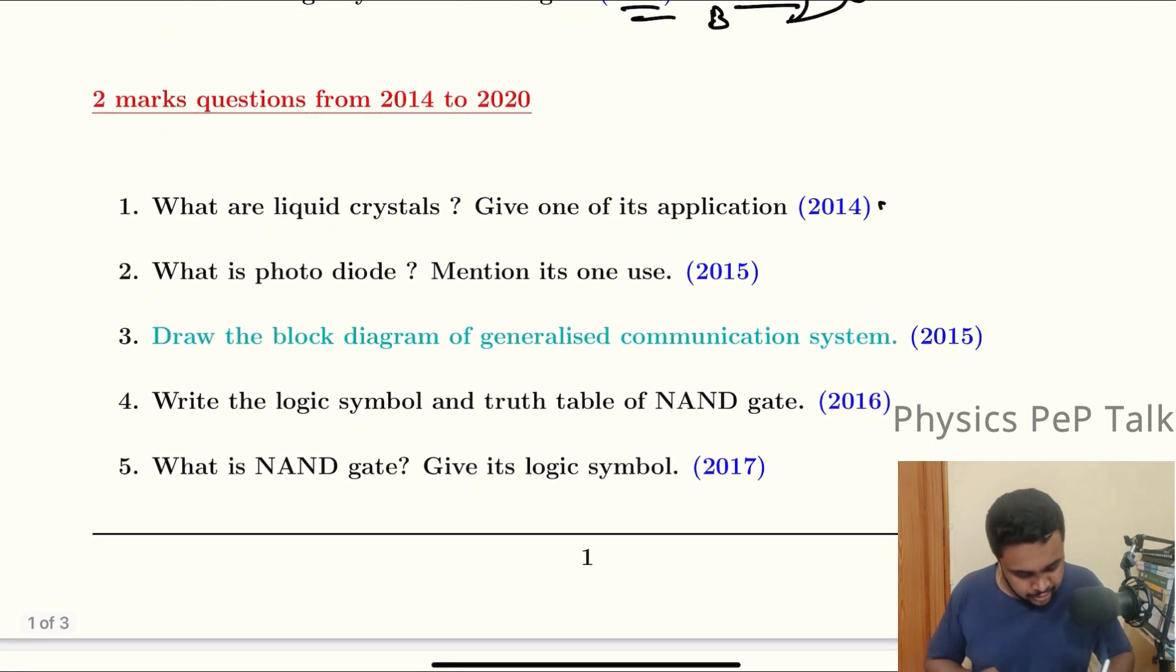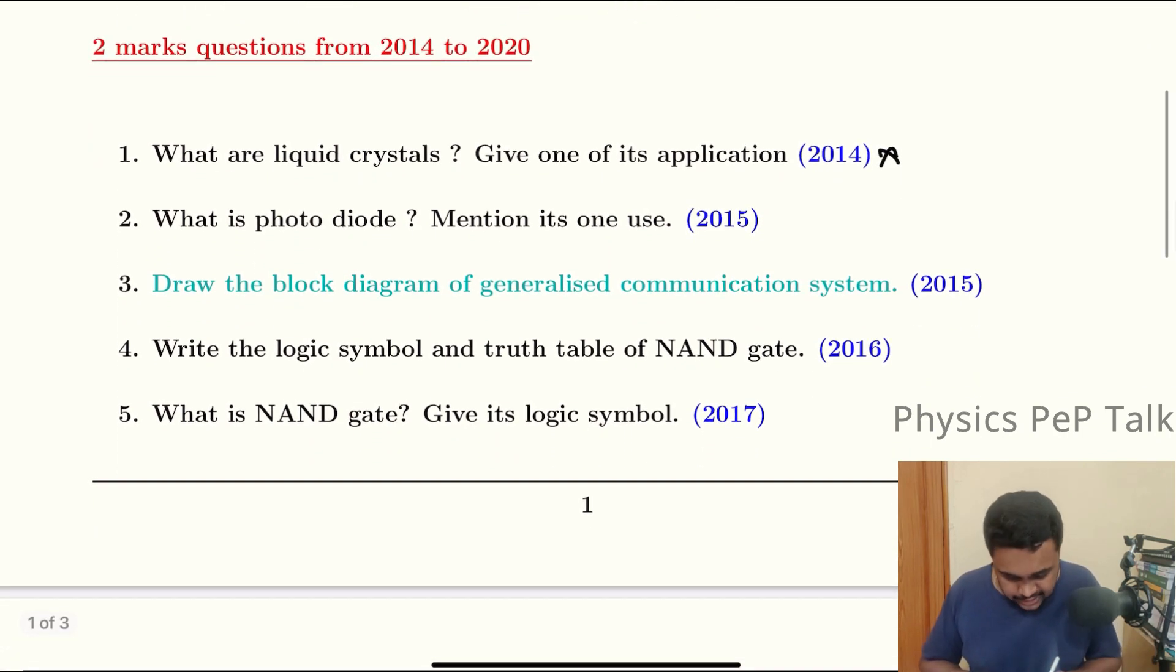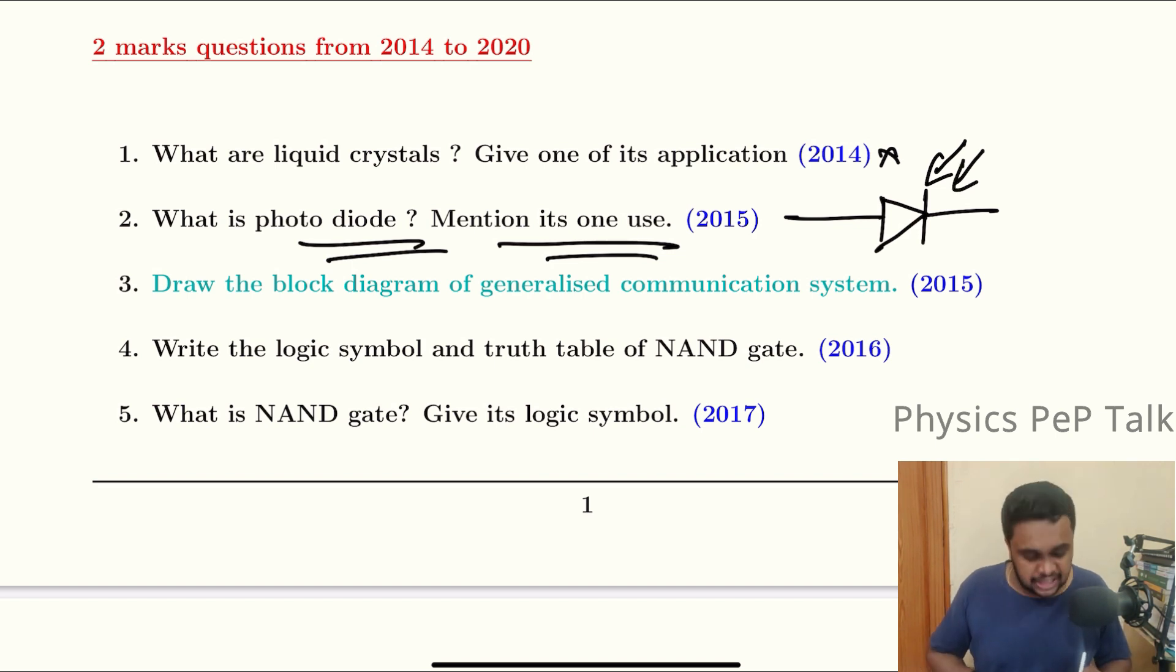Two marks question. This is the deleted portion. What is photodiode? Mention its one use. Photodiode is a special type of PN junction which works only in reverse biased condition.